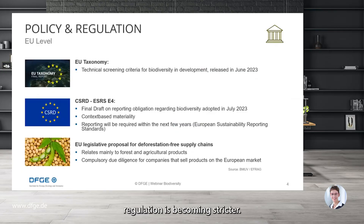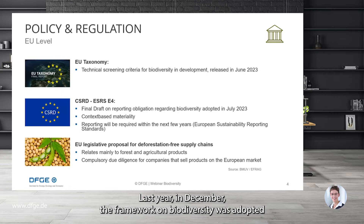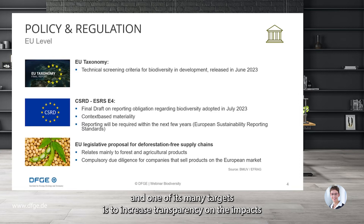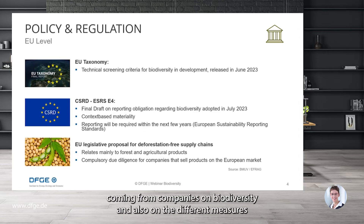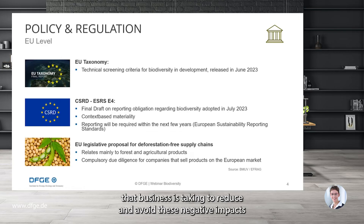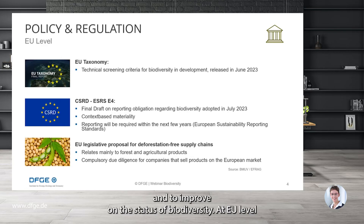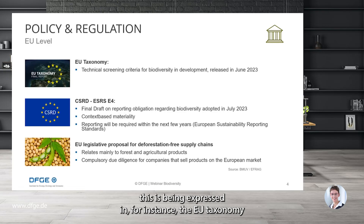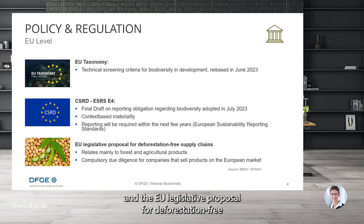Policy and regulation is also becoming stricter. Last year in December, the framework on biodiversity was adopted, and one of its many targets is to increase transparency on the impacts coming from companies on biodiversity, and also on the different measures that businesses are taking to reduce and avoid these negative impacts and to improve on the state of biodiversity. At EU level, this is being expressed in, for instance, the EU taxonomy, the new directive on corporate social reporting, and the EU legislative proposal for deforestation-free supply chains.